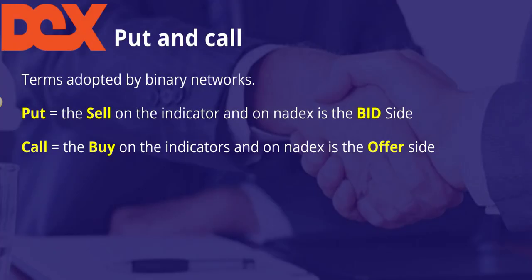First, let's talk about what a put and a call is. When an alert comes up it's referred to as put and call — these terms were adopted by binary worker networks a long time ago. Put equals the sell side on the indicator, and on Nadex it's referred to as the bid side, usually the left-hand side. Call equals the buy side on the indicator, and on Nadex it's referred to as the offer side. So one is the down and one is the up.